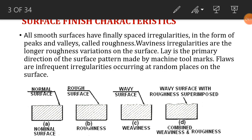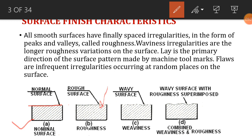Now let's look at surface finish characteristics. There are four different figures here. The first is the normal face, which is the top of the surface. The second shows roughness — you can see the roughness changes and irregularities on the surface. The third shows waviness, and the fourth shows the combined effect of roughness and waviness together.